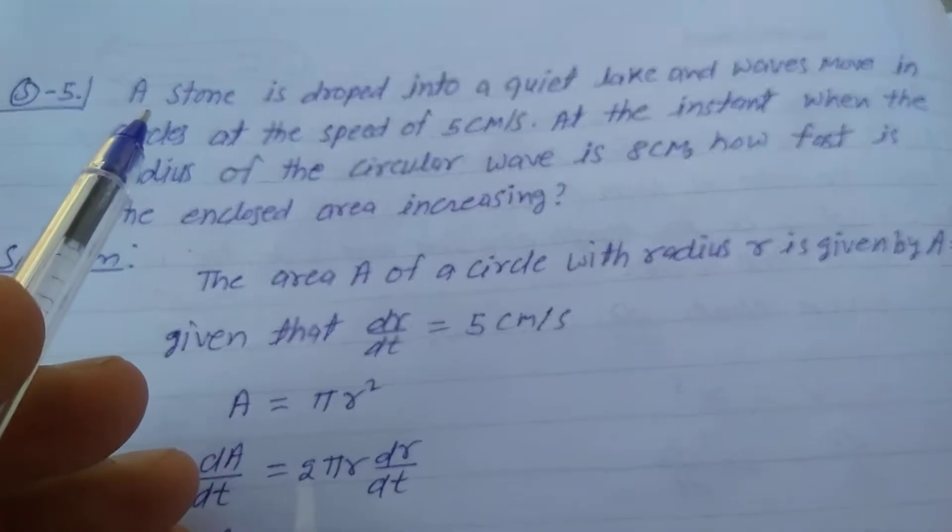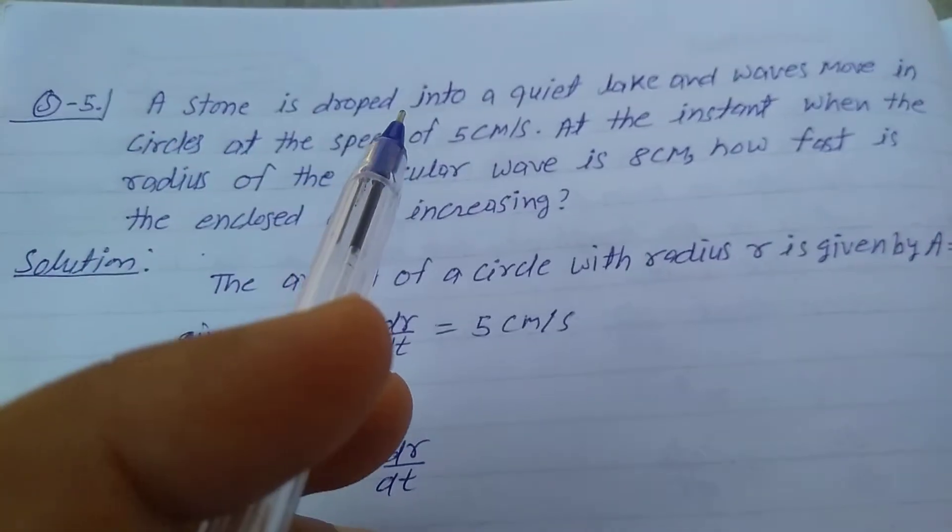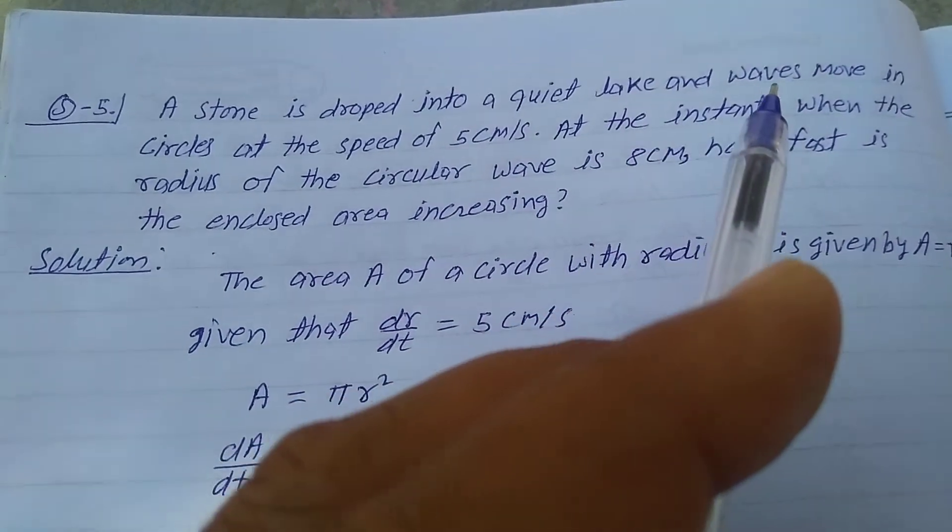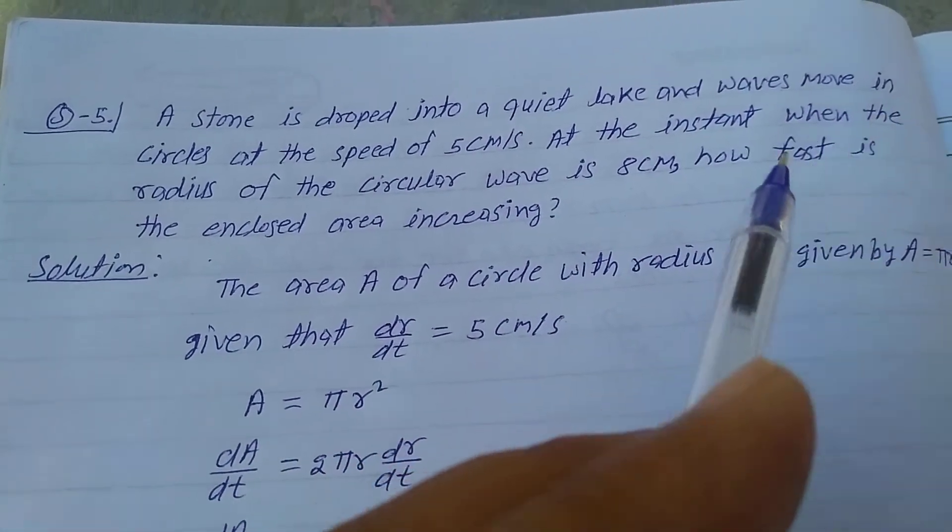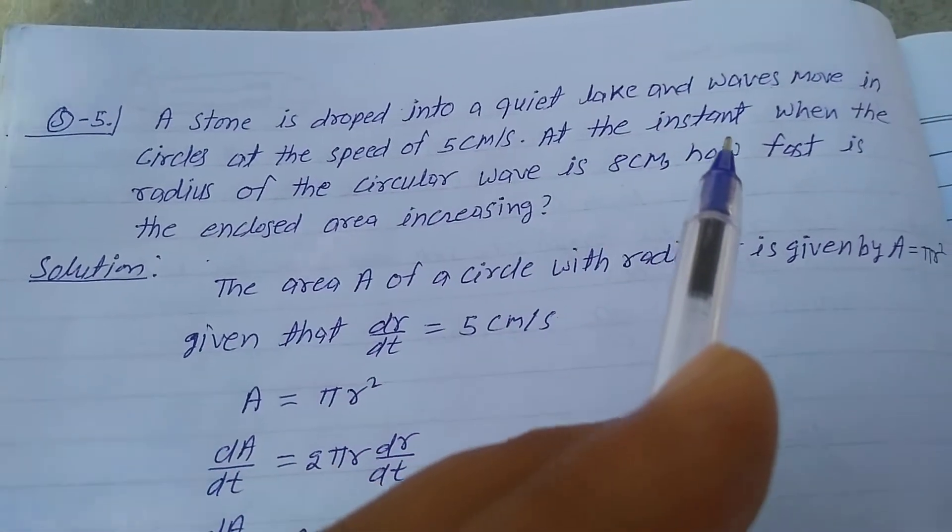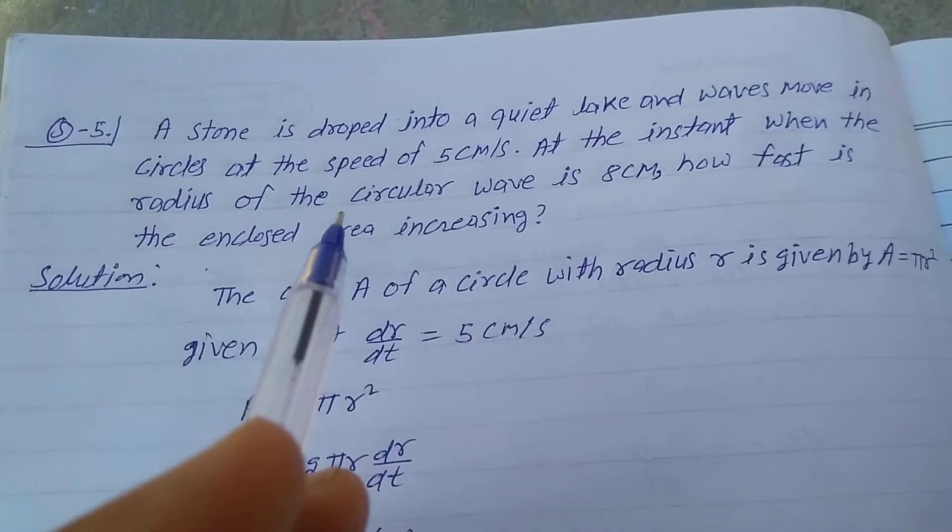Let me explain question number 5, Exercise 6.1, Class 12. A stone is dropped into a quiet lake and waves move in circles at the speed of 5 centimeters per second. At the instant when the radius of the circular wave is 8 centimeters, how fast is the enclosed area increasing?